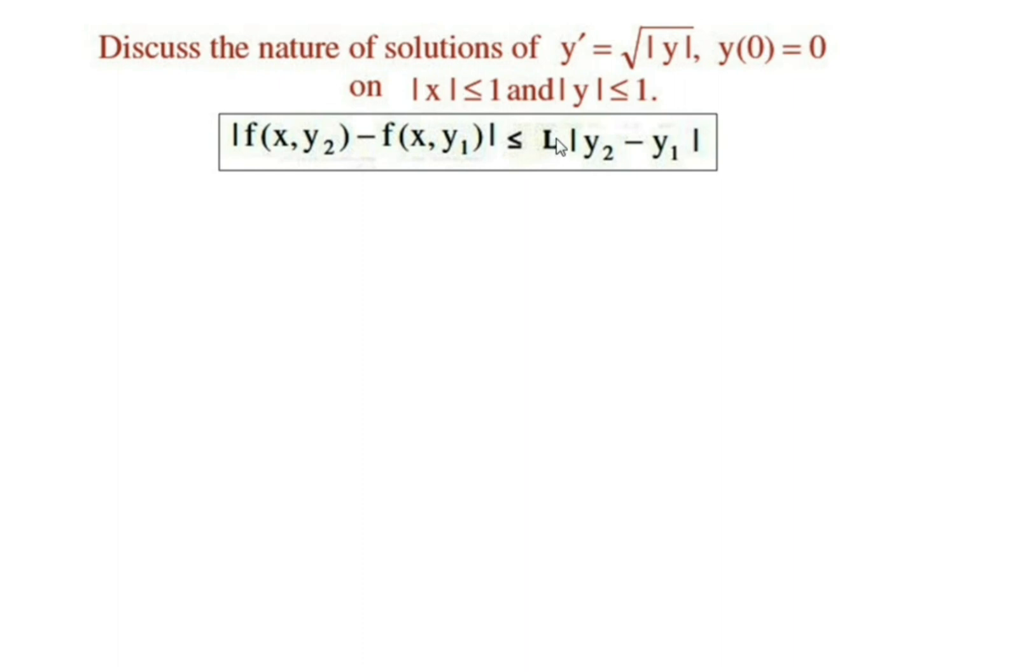Here, we are given the function f(x,y) = √|y|, which is chosen from y' = √|y|. It is continuous for all values of y. To get the nature of the solution, let us take y₁ = 0 and y₂ > 0 as two points.